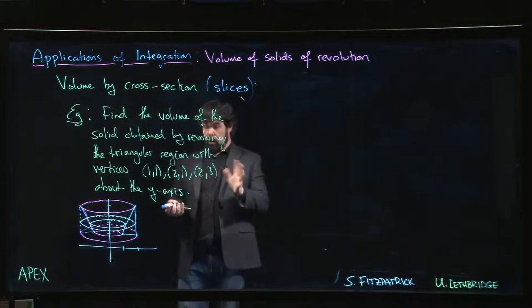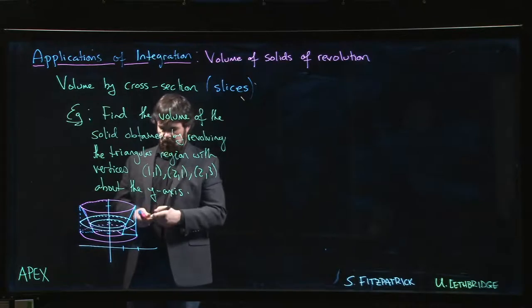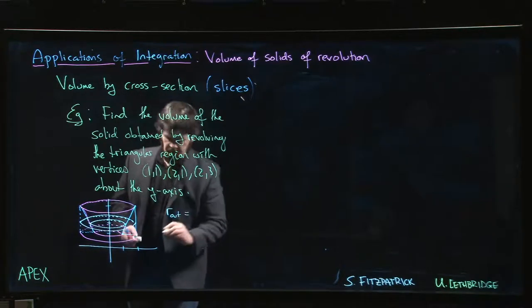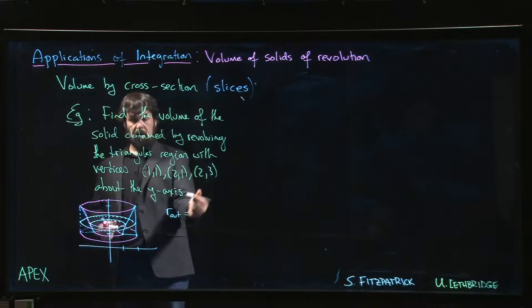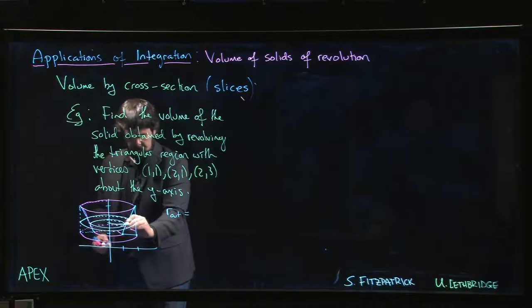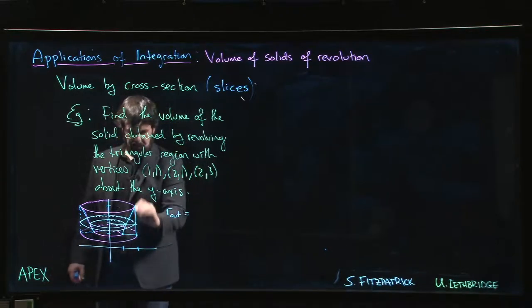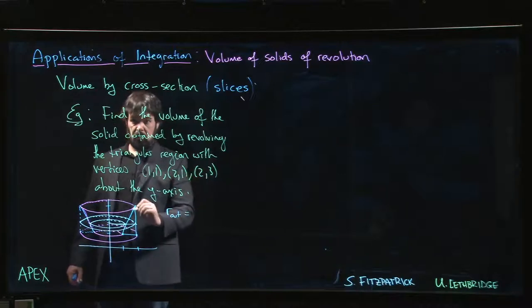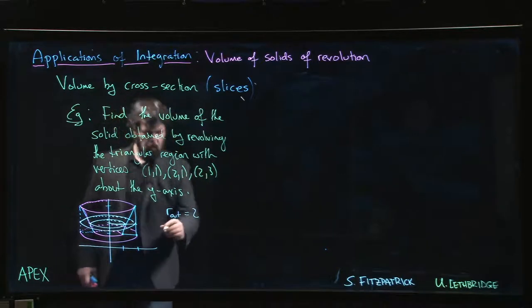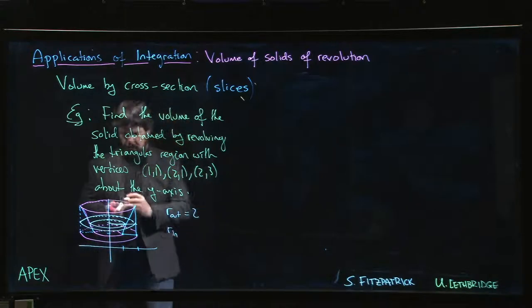And so we have to work out, well what are my outer and inner radii for this particular problem? The outer radius, and we're measuring from the y-axis, that outer radius is the simpler one. That's just this side of the triangle, that constant x value of 2. What about the inner radius?